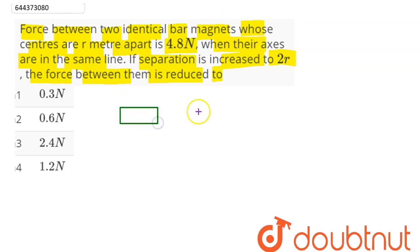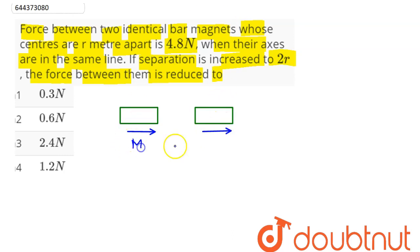We have two identical bar magnets having the same magnetic moment. Since they are identical bar magnets, they have the same magnetic dipole moment. The center-to-center distance is given as r.